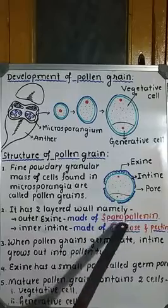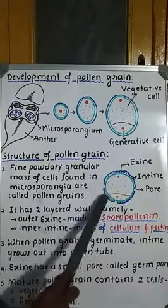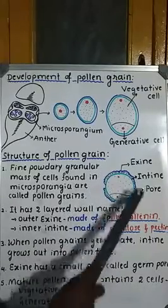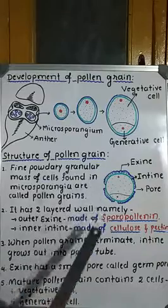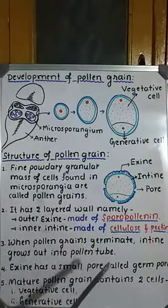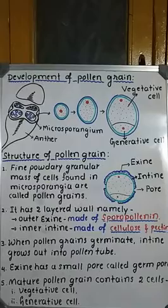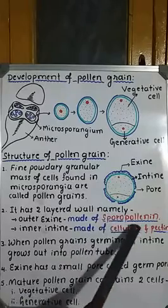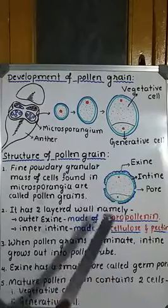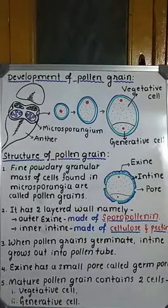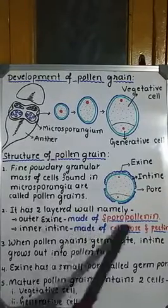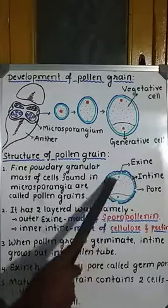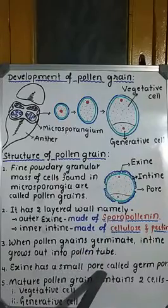Sporopollenin is a hard organic material present on the exine. Its function is to protect the pollen grains from environmental extremes like high temperature, alkalis, and strong acids. Also, due to the presence of this hard organic substance sporopollenin, pollen grains can be well preserved as fossils. This is the significance of sporopollenin.